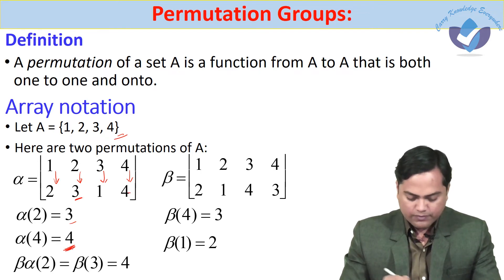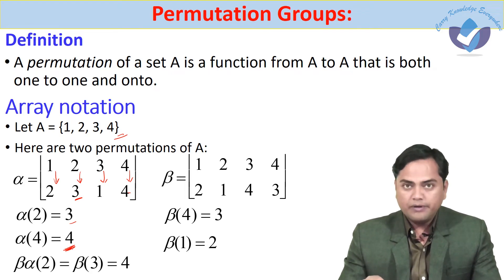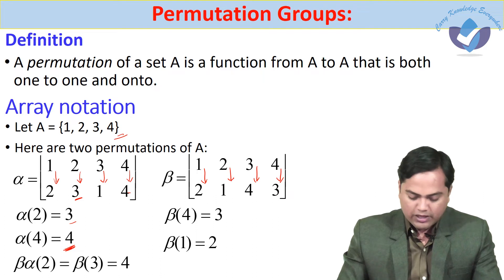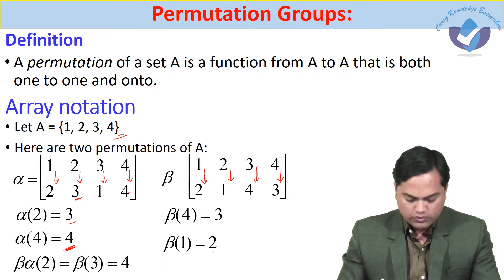Now if you look at beta: beta(1) = 2, beta(2) = 1, beta(3) = 4, and beta(4) = 3. And likewise, now if we combine the two...